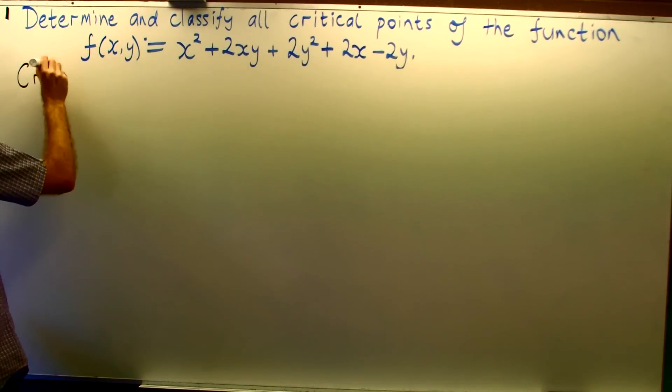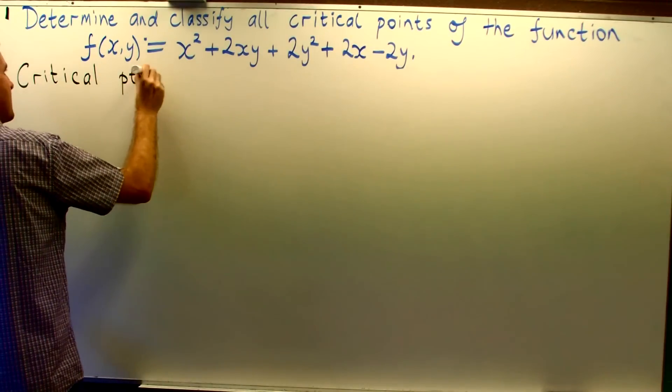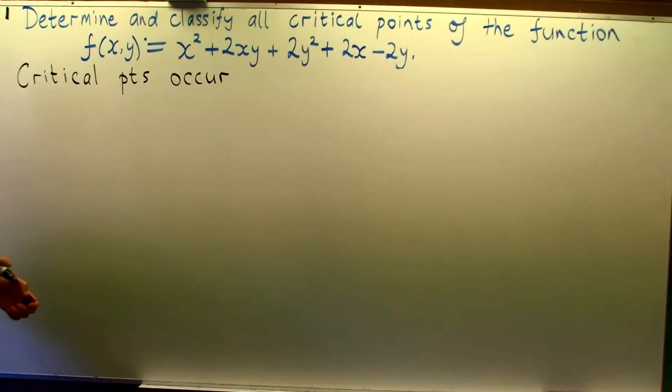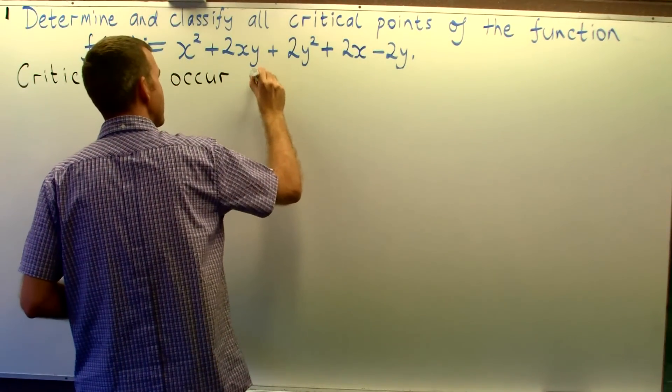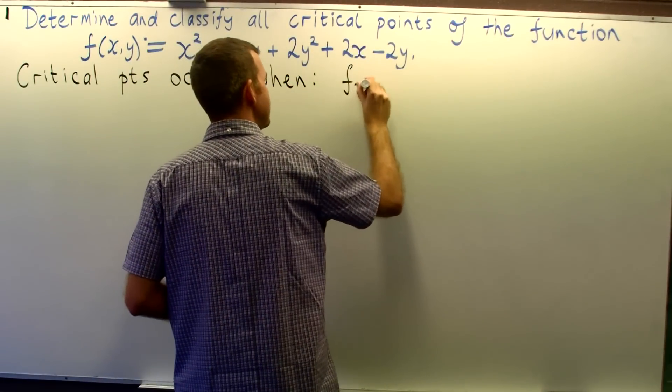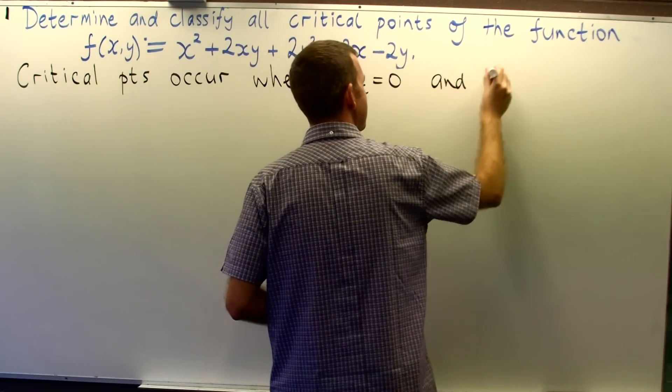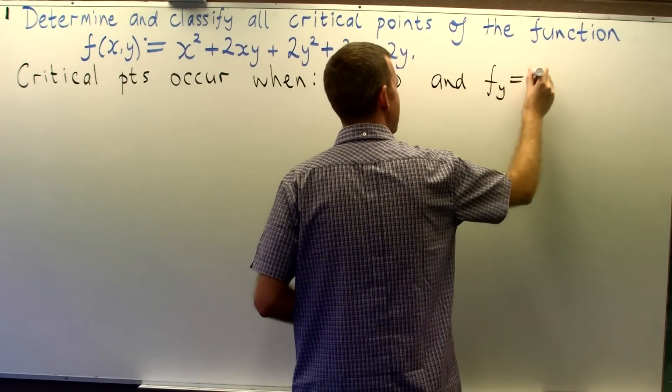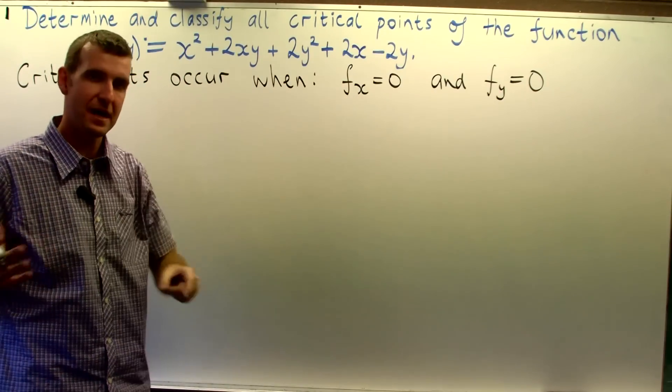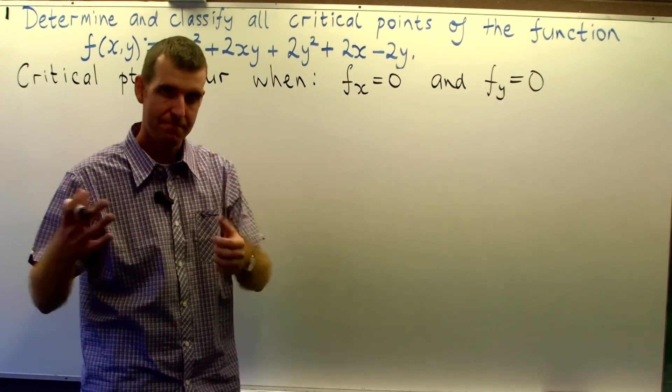Right, so the important thing here is to identify that the critical points occur when the two partial derivatives are both equal to zero. Okay, by the subscripts here, f sub x means df/dx, the partial derivative. Okay, and f sub y means df/dy partial derivative.